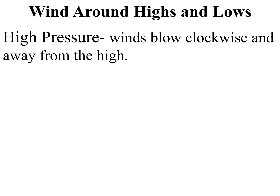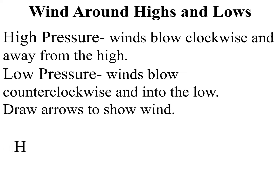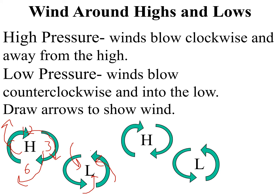So winds around highs and lows — the Coriolis effect causes winds around highs and lows to curl as well. Winds blow clockwise around high pressure — really important to understand because that affects the weather. Low pressure is the opposite: winds blow counterclockwise around the low. Clockwise going out from the high would look like this. Counterclockwise and in around a low would look like this.